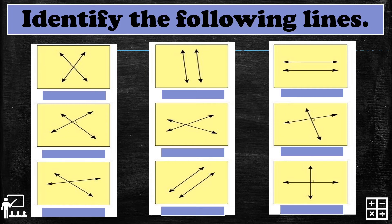If you would like to replay because you got some wrong answers, feel free to do so. I'll show you the answers now so you can compare. The first one is intersecting lines because the lines cross each other.